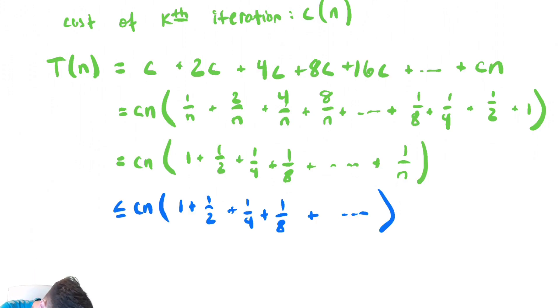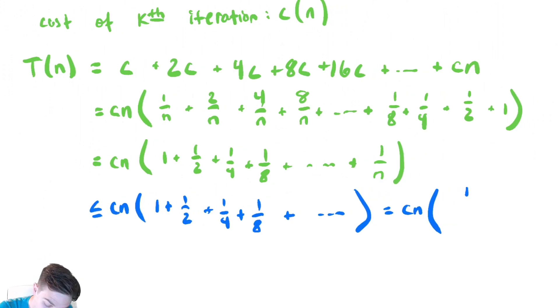This is equal to that entire infinite summation would be 1 over 1 minus the common ratio, which is a half. And that simplifies to 2. 1 over a half is just 2. So this is 2cn.